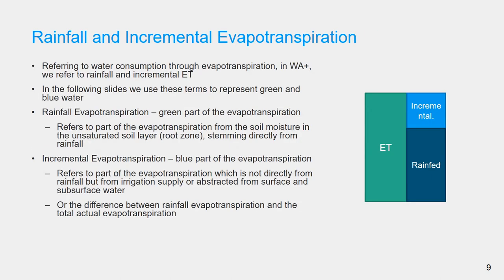Referring to water consumption through evapotranspiration, in water accounting we refer to rainfall and incremental evapotranspiration. In the remaining slides we use these terms to represent green and blue water. Rainfall evapotranspiration is the green part of evapotranspiration, while incremental evapotranspiration refers to the part not directly from rainfall but from irrigation supply or abstracted from surface and subsurface water — essentially the difference between rainfall evapotranspiration and the actual evapotranspiration.